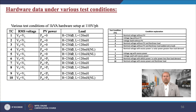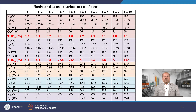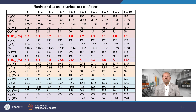Here, various test conditions of the hardware setup at 110 volt per phase are considered. For the above test conditions, various parameters such as voltage, current, power factor, real and reactive power, and THD are measured at the source side, load side, series and shunt side, as well as towards the DC link side. These are tabulated clearly, and from the table we can observe the behavior of the proposed system under various test conditions.